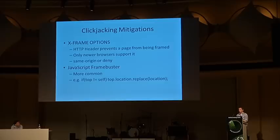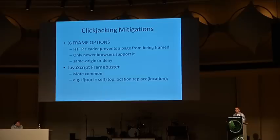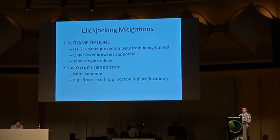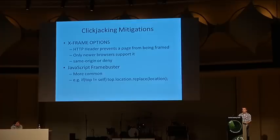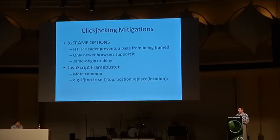X-Frame-Options says, when a browser sees it, 'I'm not going to frame this page.' There are two options: same-origin or deny. Same-origin will only allow framing from the same origin; deny won't frame pages at all. There are no bypasses for this, so X-Frame-Options is a great mitigation. But there are two serious limitations: first, only newer browsers support it — users on IE7 or Firefox 3.6 and below aren't protected. Second, there's not much flexibility — it has only two options, so if you're site A and want to frame site B, you just can't do that with X-Frame-Options.